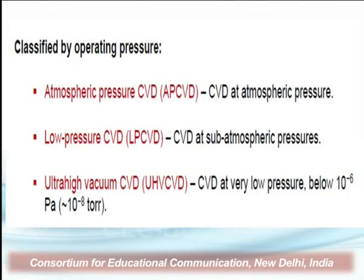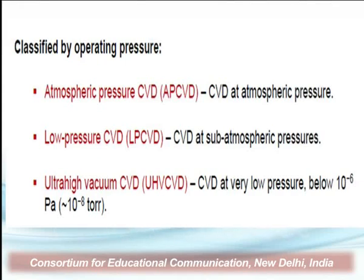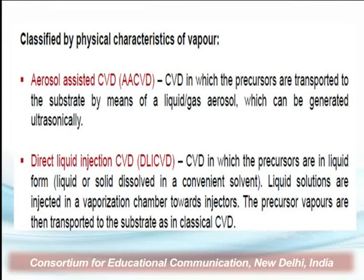This chemical deposition method is classified in many forms. On the basis of operating pressure: Number 1 is atmospheric pressure CVD, known as APCVD. Second is low-pressure CVD, known as LPCVD, which operates at sub-atmospheric pressure. Third is ultra-high vacuum CVD, known as UHVCVD, which operates at very low pressures below 10⁻⁶ to 10⁻⁸ Torr.